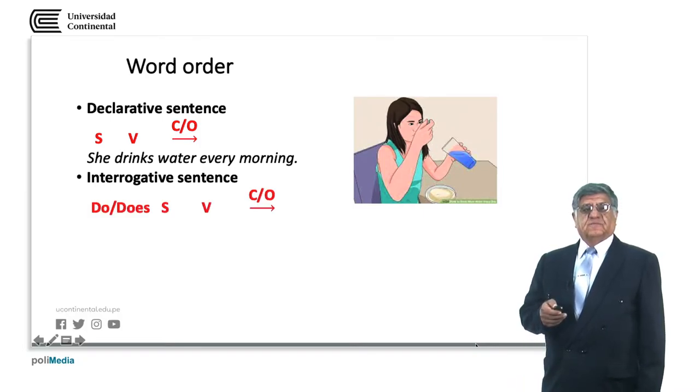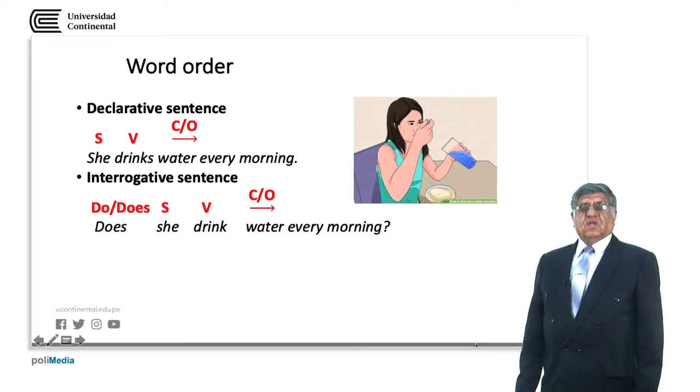In interrogative sentences, we need to use the auxiliary do or does according to the case. We have the subject, the verb and the complement. The subject is she and the auxiliary is does. The verb goes in the simple form because we are using the auxiliary. Does she drink water every morning? Auxiliary, subject, verb and complement. ASIC, remember.